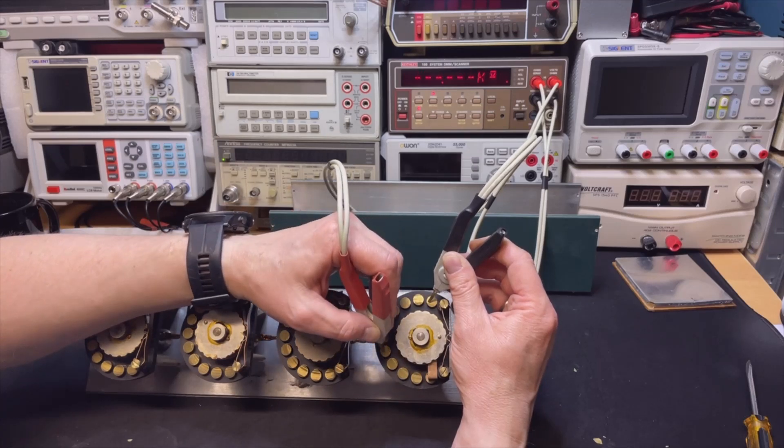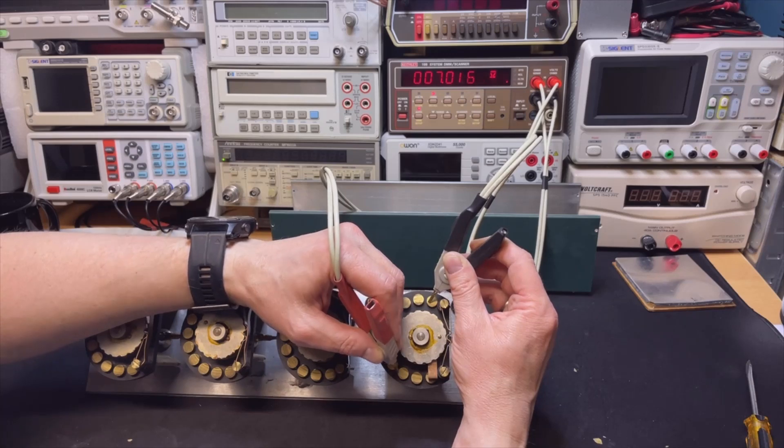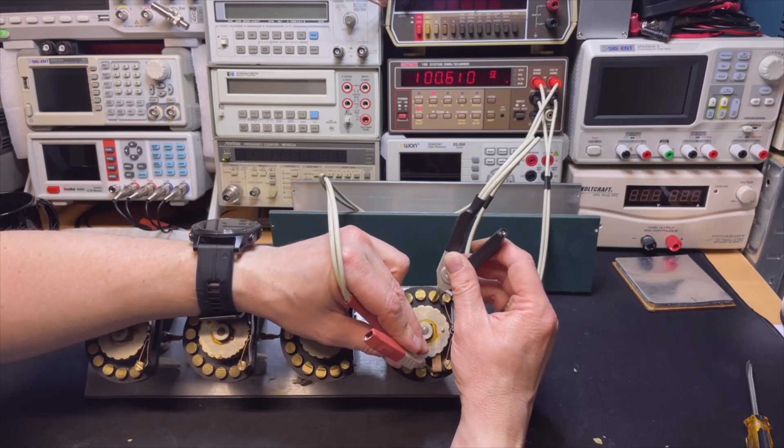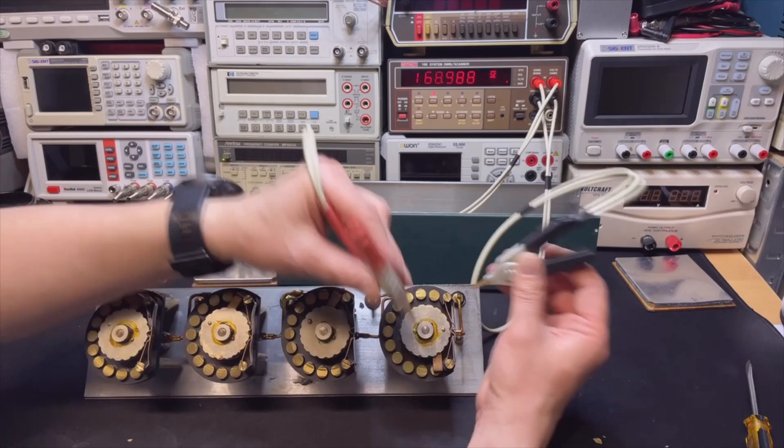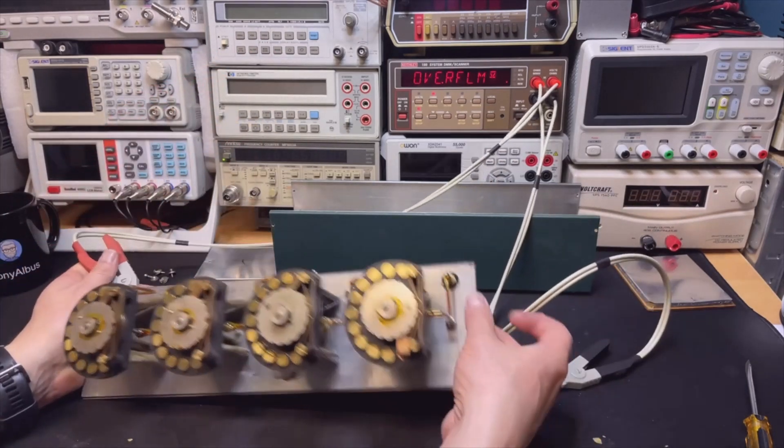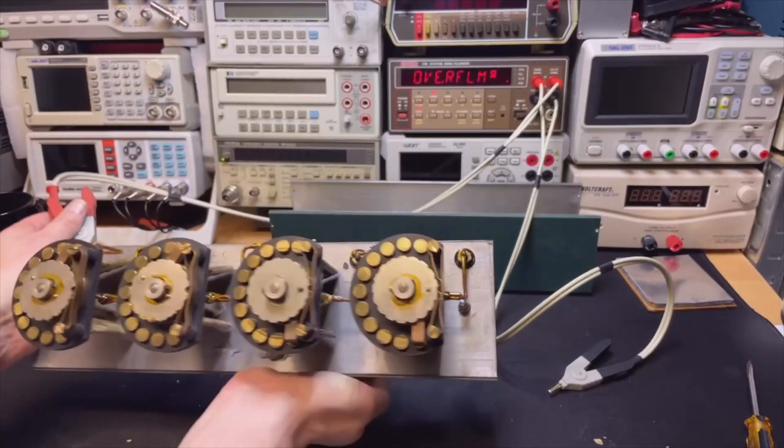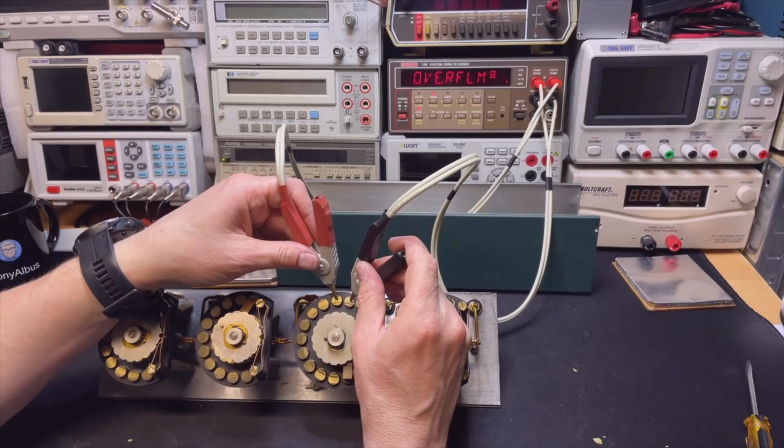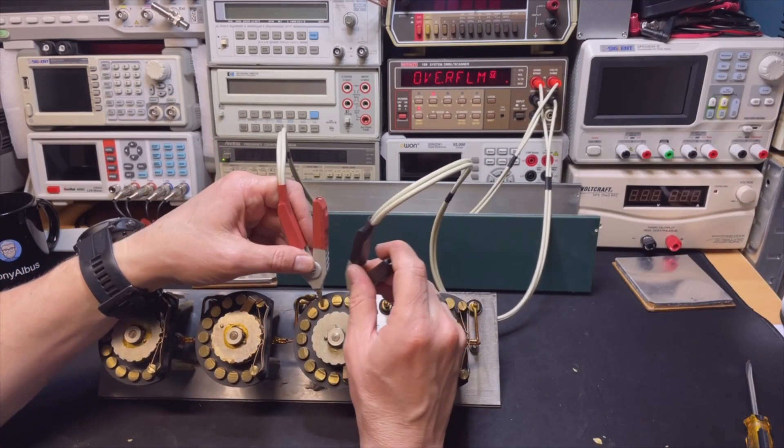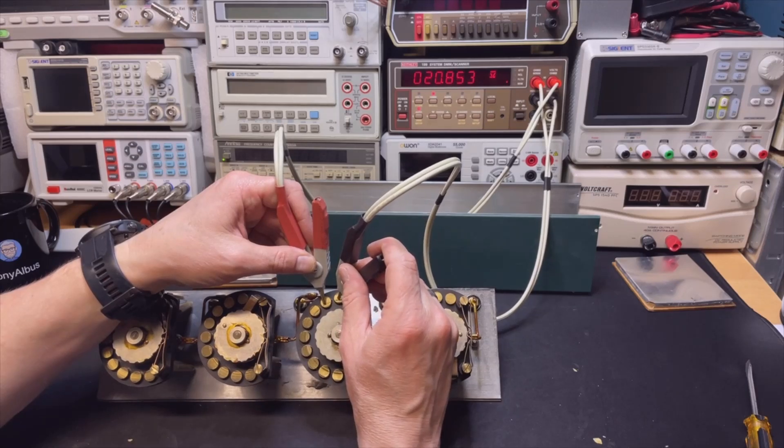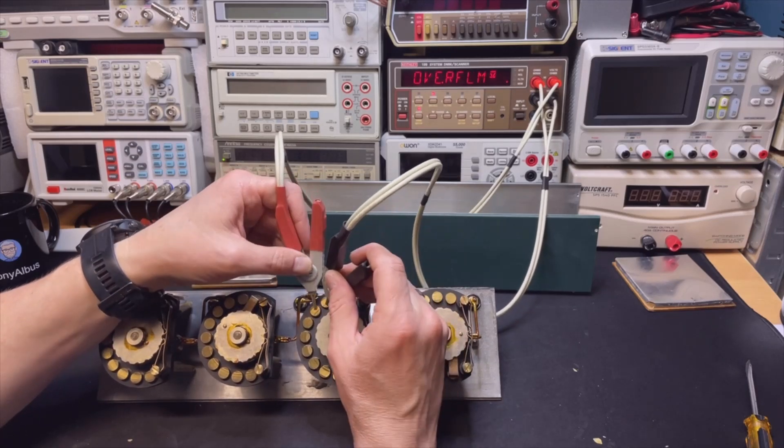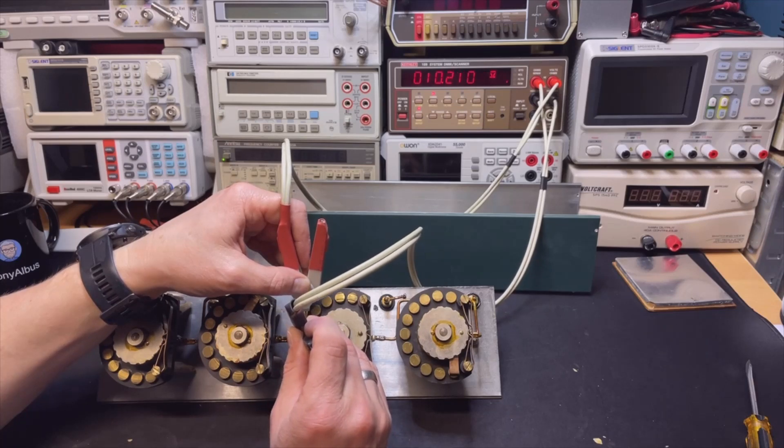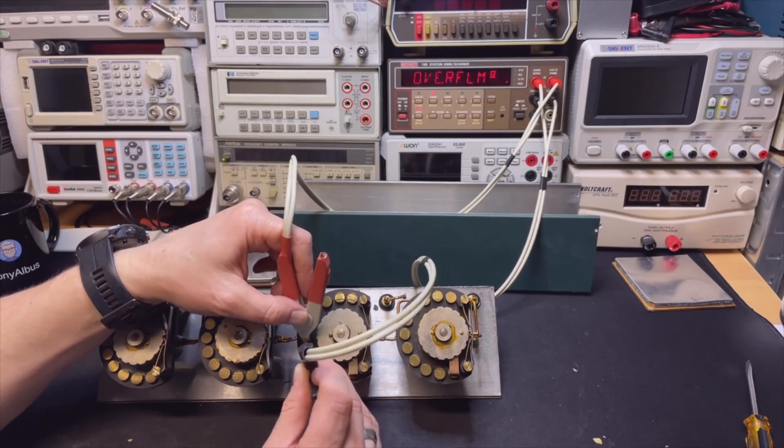Yeah, it's one, exactly. The contacts are dirty. Two, three, four, five, six, seven, eight, nine, ten. The resistors are good.